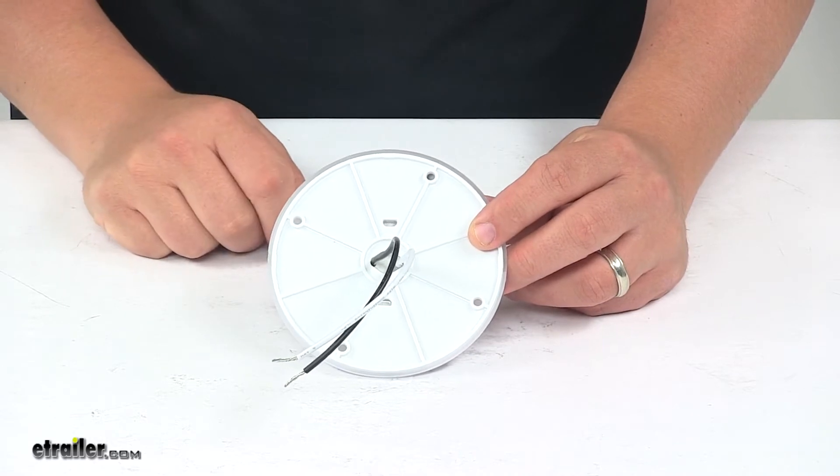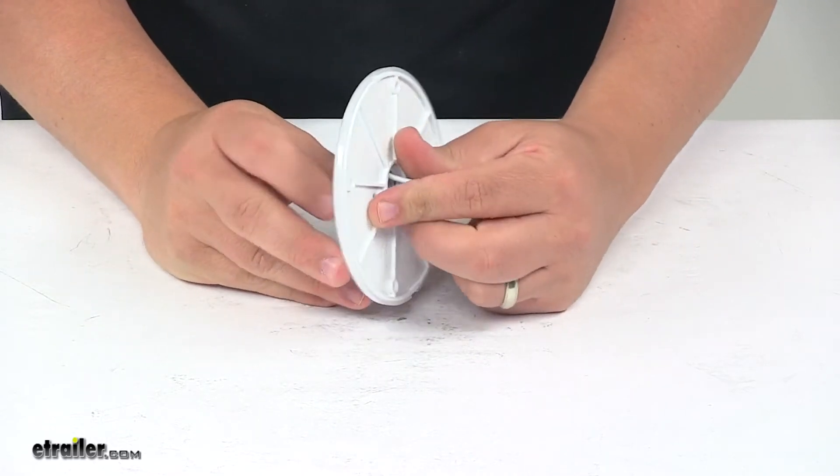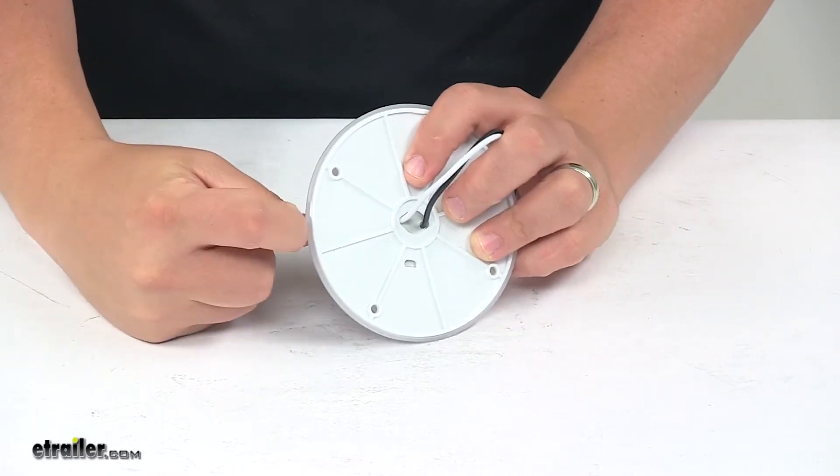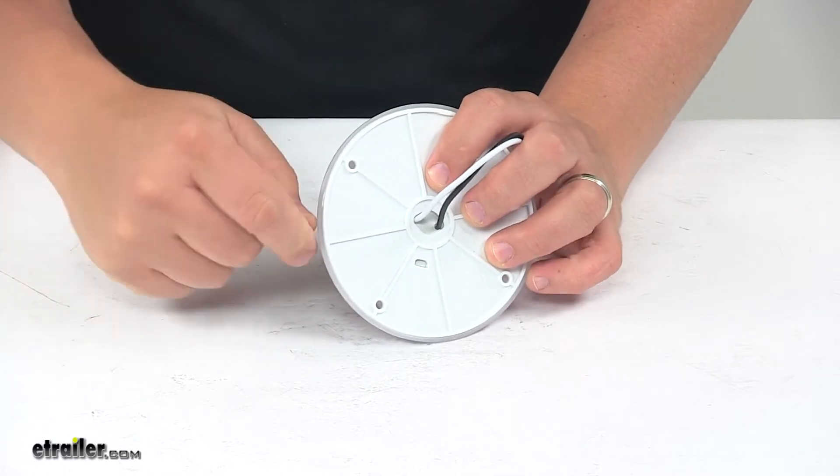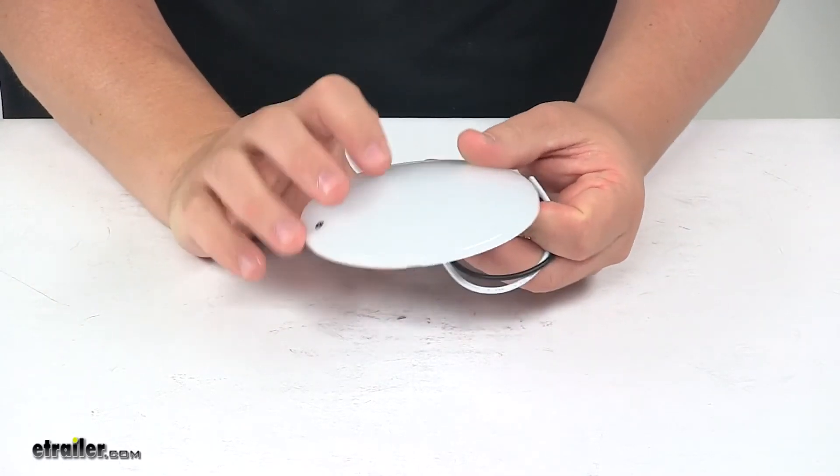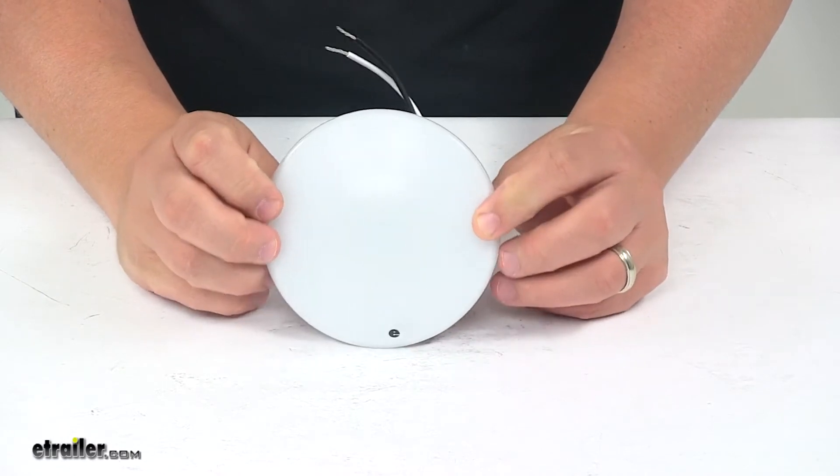You can gain access to those by simply removing the lens. I found it easiest to remove the lens by placing just a flat blade screwdriver in there, and it simply just pops right off and then snaps back on when you're ready to finish the installation.